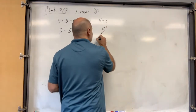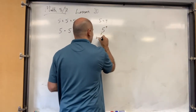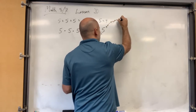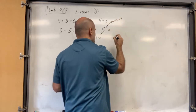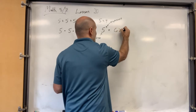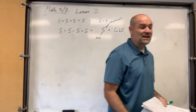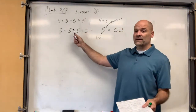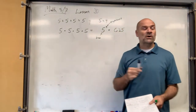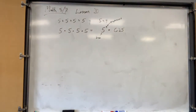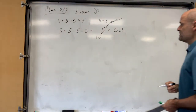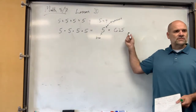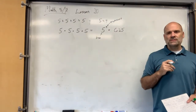So this number is called the base. This number is called the exponent. What's the answer to an exponent problem? Which is 625, right? It's not 5 times 4. This is 5 times 4 when you're adding it 4 times. But when you're multiplying 5 four times — 5 times 5 times 5 times 5 — it's 625.